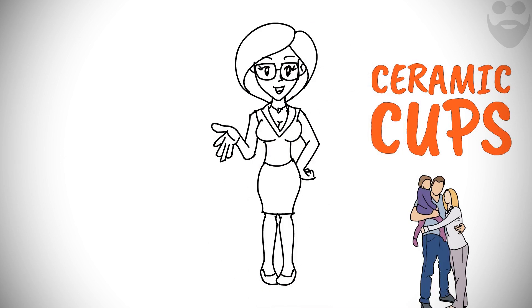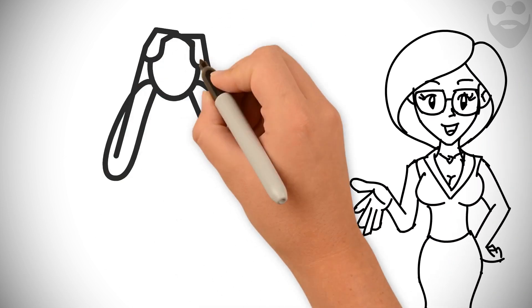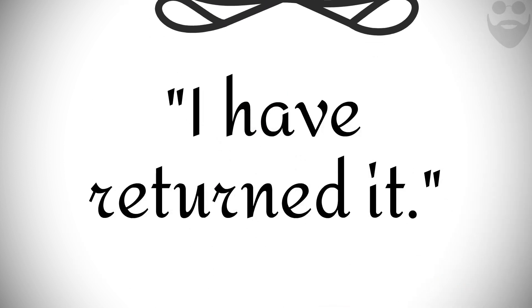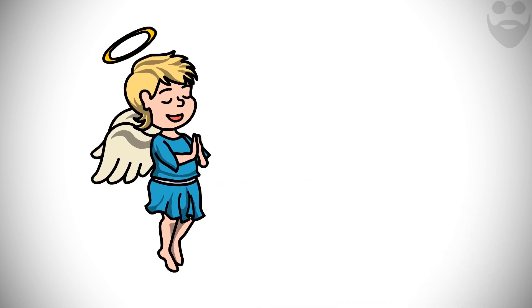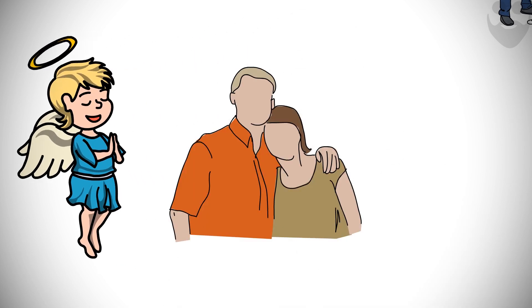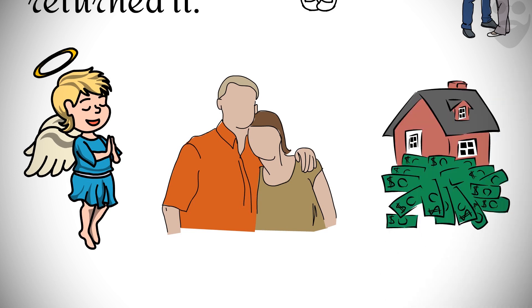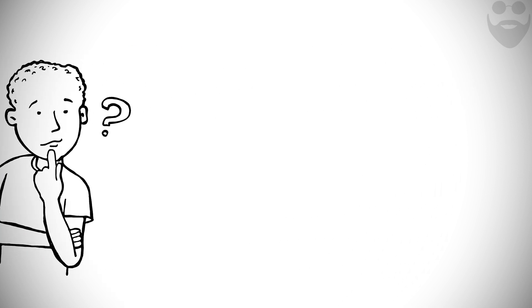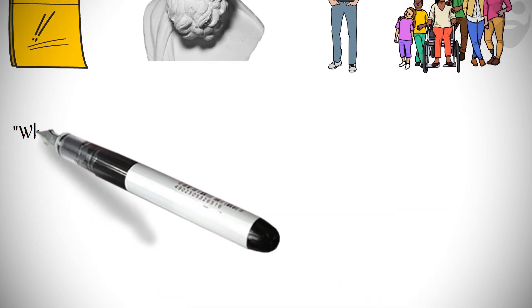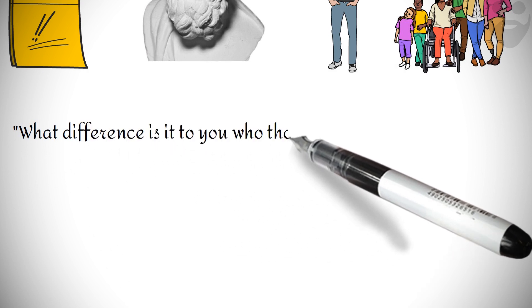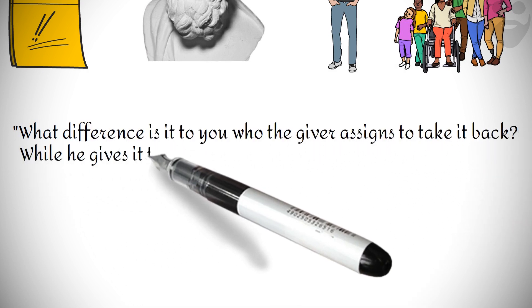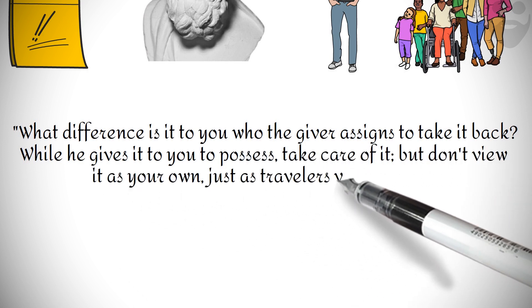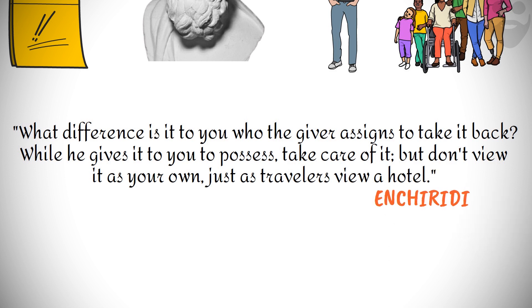Epictetus further advises us, Never say of anything, I have lost it, but I have returned it. Is your child dead? It is returned. Is your wife dead? She is returned. Is your estate taken away? Well, and is not that likewise returned? But he who took it away is a bad man. What difference is it to you who the giver assigns to take it back? While he gives it to you to possess, take care of it. But don't view it as your own, just as travelers view a hotel. Enchiridion 11.